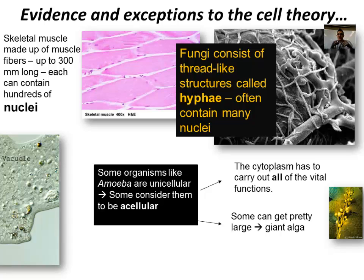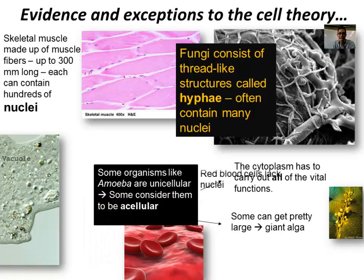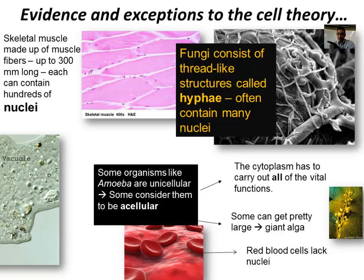Not all cells are super tiny. Giant algae are basically giant large cell structures. An ostrich egg is a large singular cell. Red blood cells are interesting because they don't have nuclei — they don't have DNA. So at a crime scene, if there's a pool of blood, it's not the red blood cells you look at for DNA evidence — you're looking at the white blood cells. If someone has a disease where they don't have enough white blood cells, collecting DNA evidence becomes very difficult.